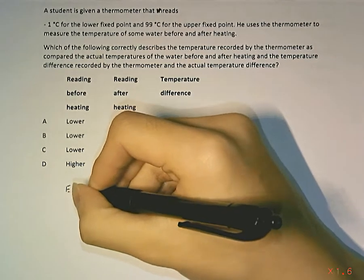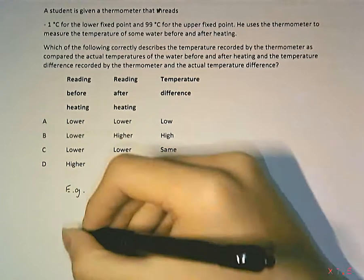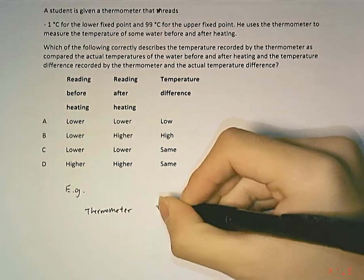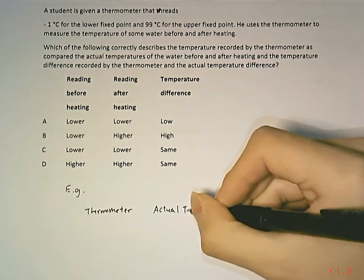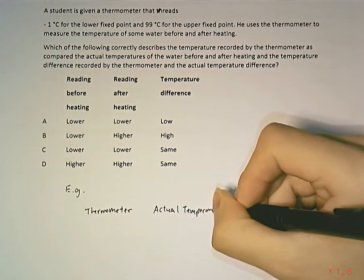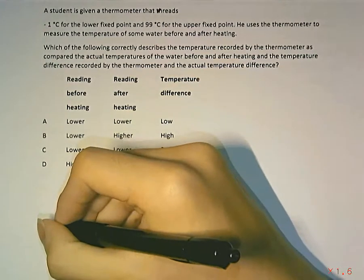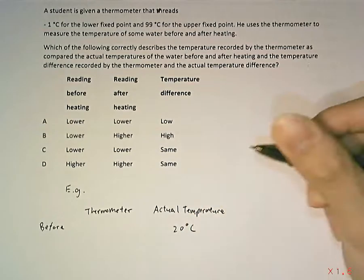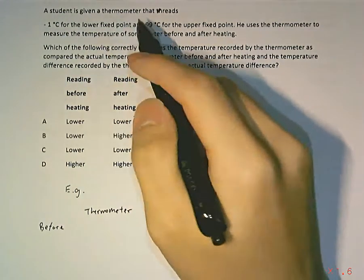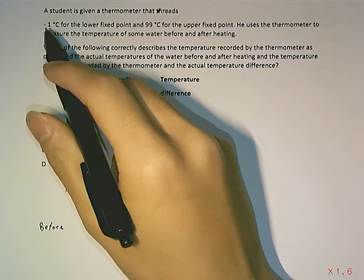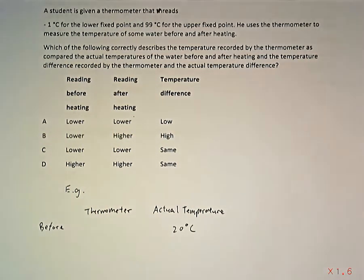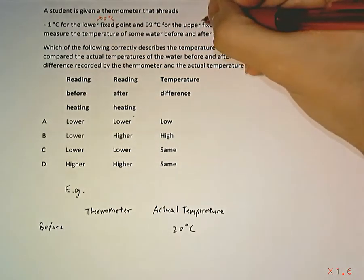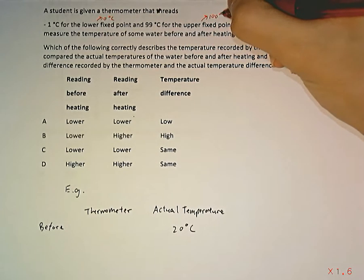Let's look at an example. We have our thermometer reading and the actual temperature. Before heating, let's say the water is at 20 degrees Celsius — that's the actual temperature. This thermometer records negative 1 degree Celsius for the lower fixed point, which in actual temperature is supposed to be 0 degrees Celsius, and the upper fixed point is 100 degrees Celsius.